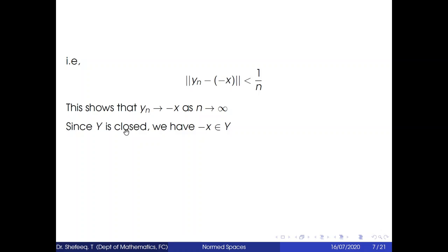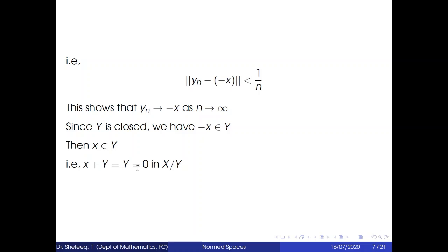Since Y is closed, closure of Y equals Y. Since y_n converges to −x, we have −x belongs to the closure of Y, which equals Y. This means −x belongs to Y. Since Y is a linear space, −x ∈ Y implies x ∈ Y, so x + Y = Y, which is the zero element in X/Y. Therefore, quotient norm of x + Y = 0 implies x + Y = 0 in the quotient space.